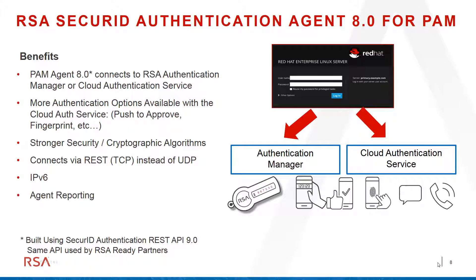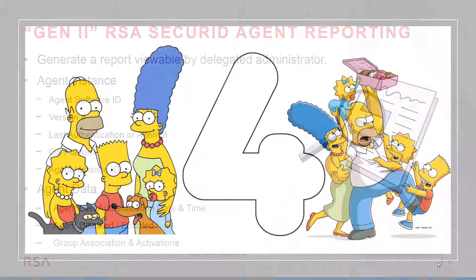Number three: PAM, a Linux-based agent. You can now leverage Authentication Manager or the Cloud Authentication Service. Not only can you do hardware and software tokens, but you can also do multi-factor authentication with push-to-approve, push notifications, and biometrics — all with those Linux servers.